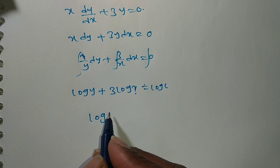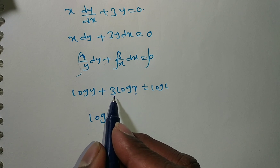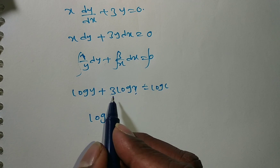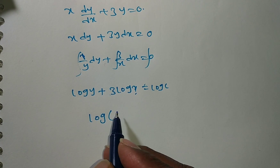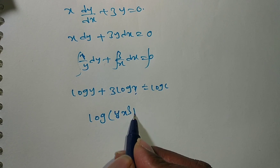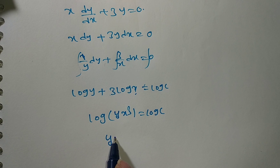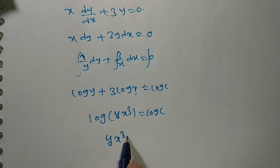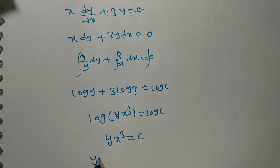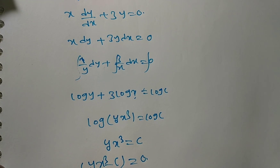Using log properties — m log n equals log n to the power m — we get log(y x³) equals log c. Taking antilog: yx³ equals c, or yx³ minus c equals zero. This is the first solution.